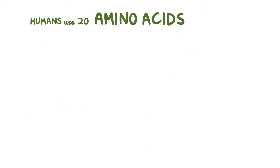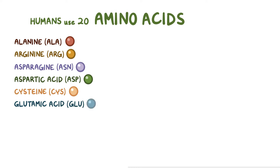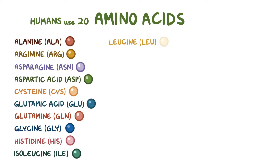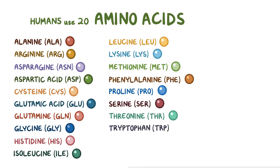Humans use 20 amino acids in our day-to-day protein making. So we have alanine, arginine, asparagine, aspartic acid, cysteine, glutamic acid, glutamine, glycine, histidine, isoleucine, leucine, lysine, methionine, phenylalanine, proline, serine, threonine, tryptophan, tyrosine, and valine. That's 20.